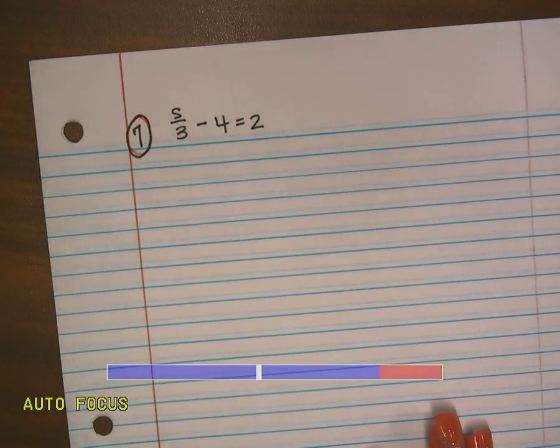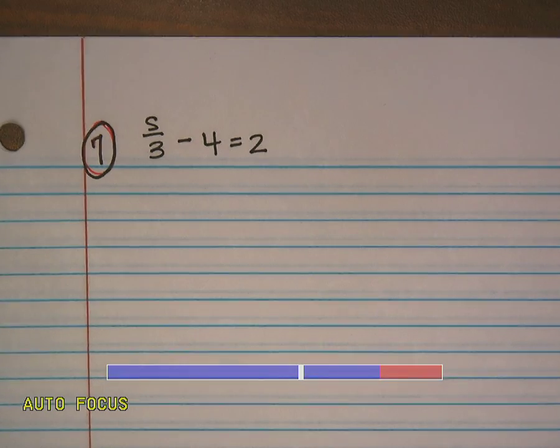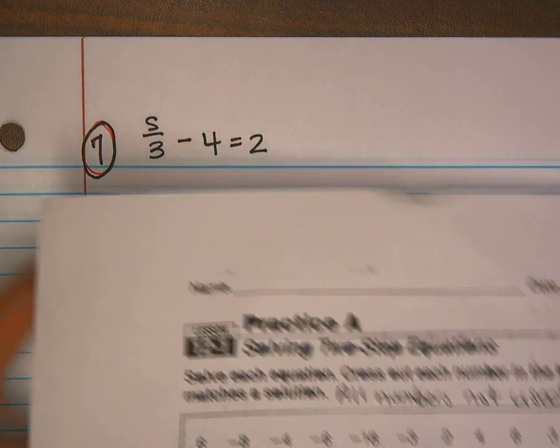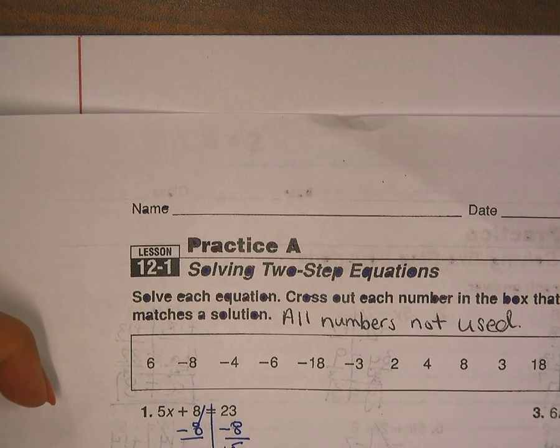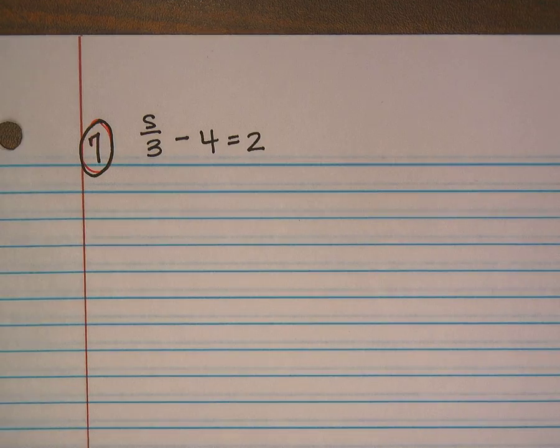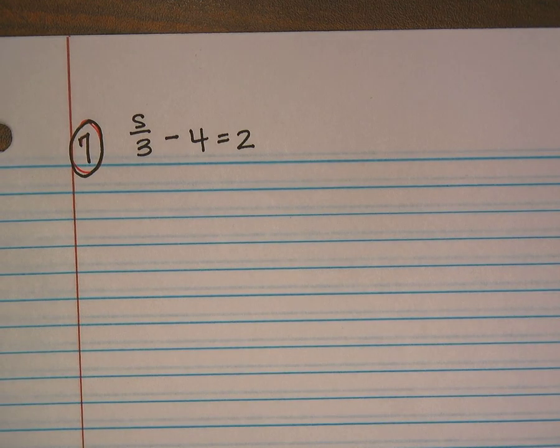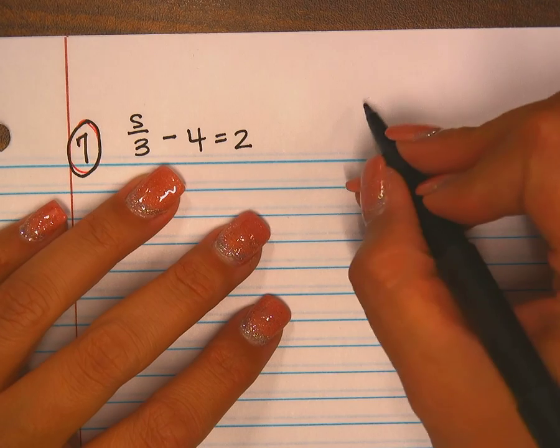Hello, we're looking at number seven from the homework. This is Practice A: Solving Two-Step Equations. I'm on the front side, number seven. Because it's two-step, my rules are...